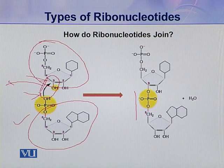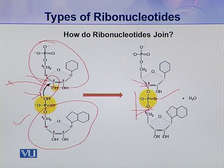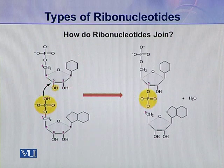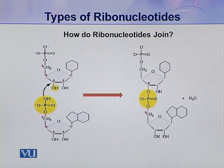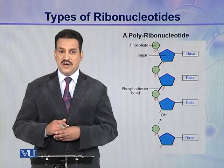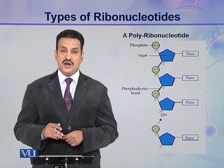Why is this called phosphodiester linkage? Because one phosphate group is present, and this phosphate group is linked with one pentose through an ester linkage, and a second ester linkage is also present — so there is one phosphate and two esters, hence it is called phosphodiester. In this way, many ribonucleotides join together and make a polymeric chain called a polyribonucleotide, or ribonucleic acid.